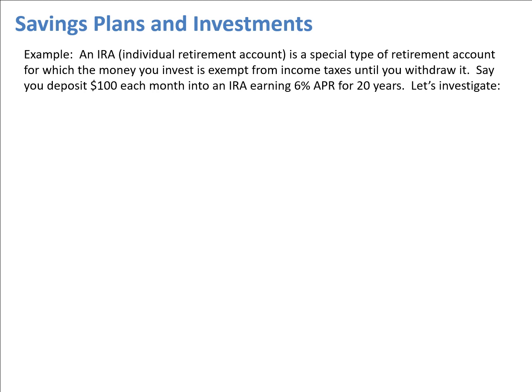Our next topic in our financial math chapter is savings plans and investments. We looked at investments when we dealt with compound interest earlier in the term, but there we were looking at having a lump sum that we put into an account and left there without changing it. In this section we're going to look at savings plans where we deposit a regular amount each month, and we'll use spreadsheets to work out how much money we have over a certain period of time.